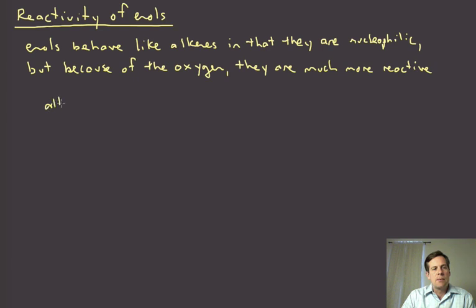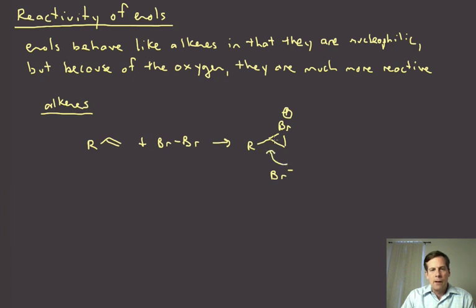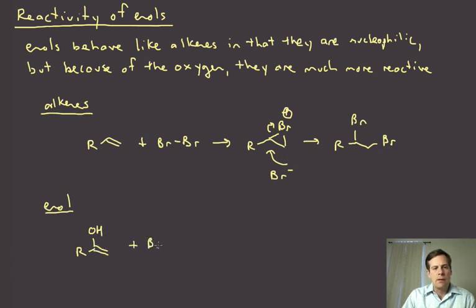So let's just take a simple example here. So you remember, of course, the reaction of alkenes with bromine. So react with Br2, and that goes to give an intermediate that has this bromonium ion type of intermediate, and then Br- can come in and basically open that up and give you a brominated alkene. So that's review from last semester. So an enol can do very much the same thing.